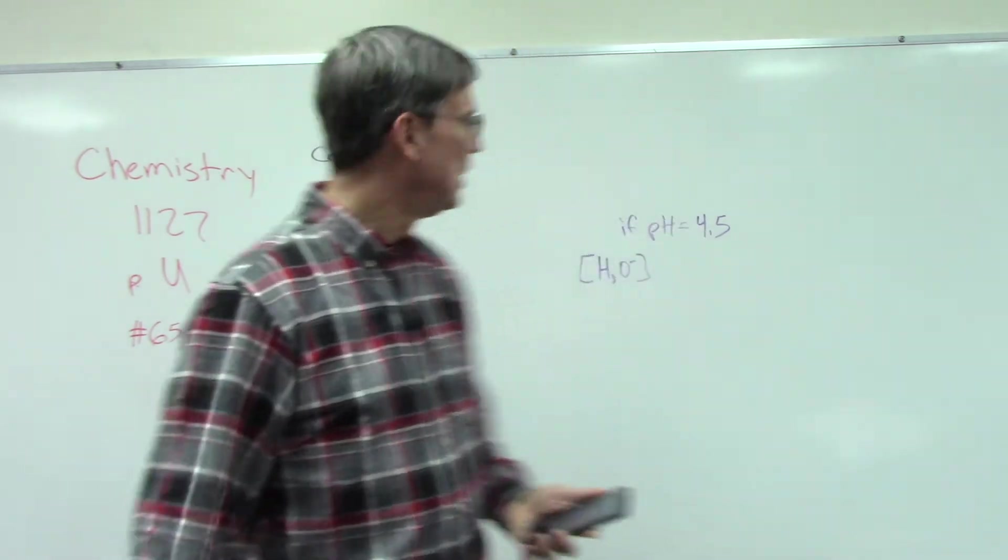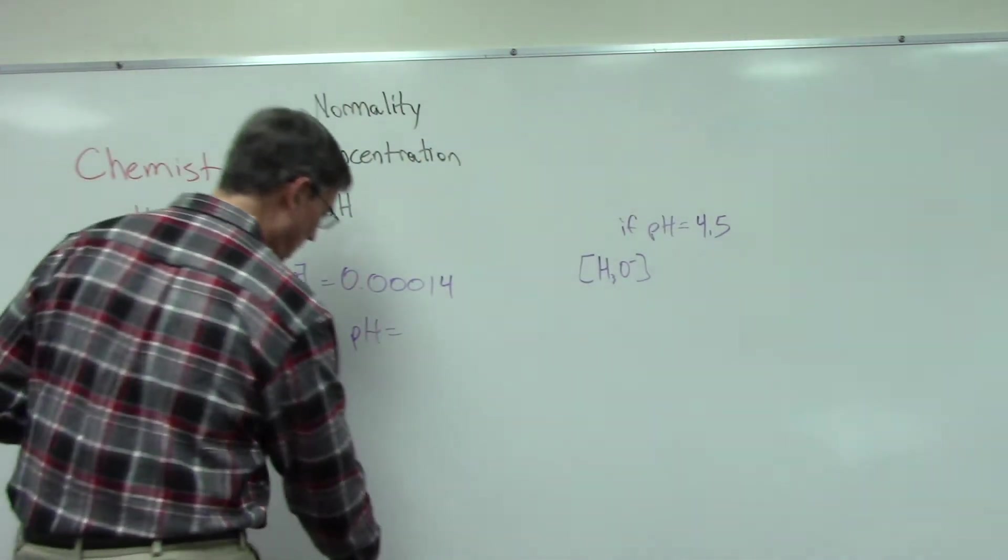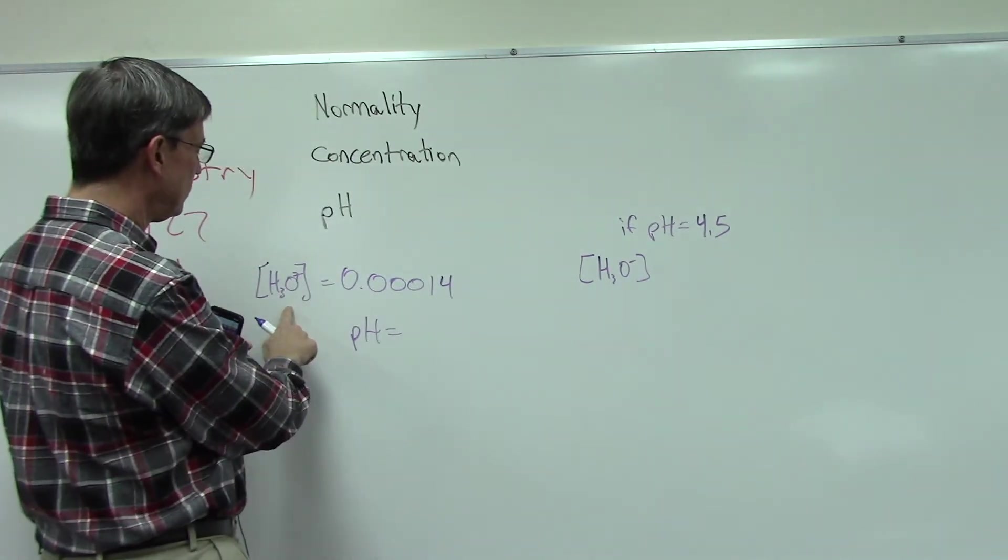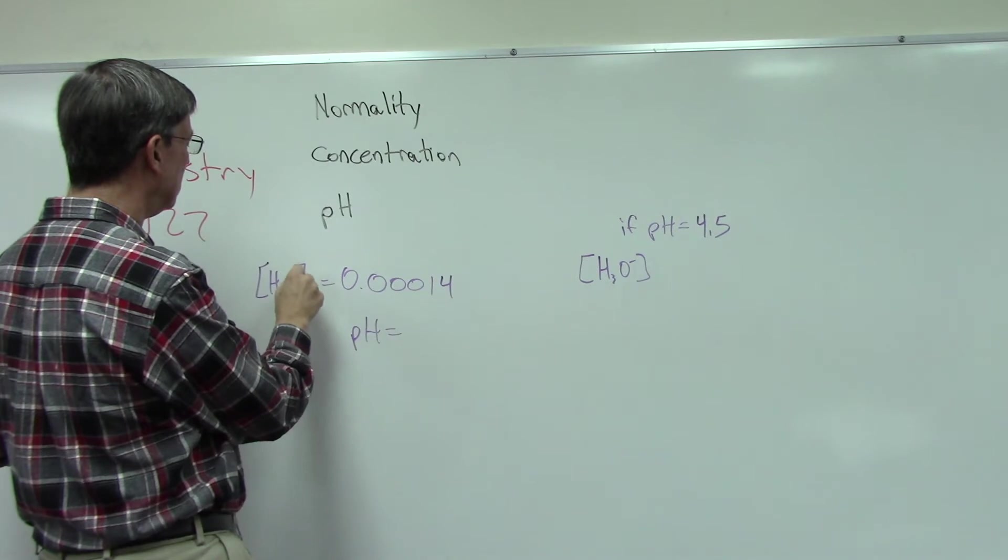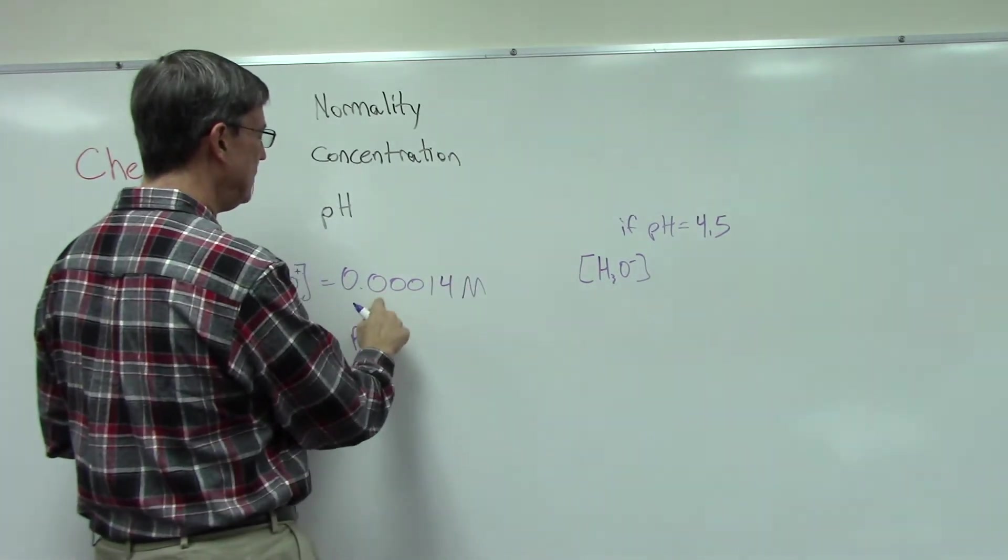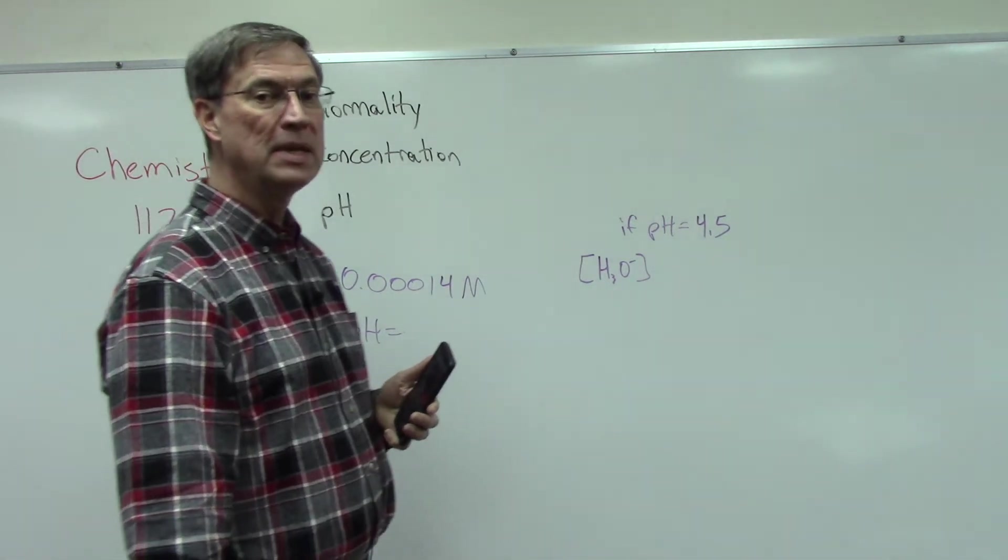This first problem says if the concentration of hydronium ions, which is the H3O+ (that should be a positive, looks confusing), is 0.00014 molarity, what is the pH?